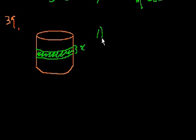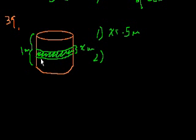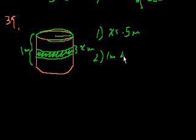Statement 1: x is equal to 0.5 meters. That alone doesn't help us — we still need the circumference of the tub. Statement 2: the height of the tub is 1 meter. That still doesn't tell us how far around the tub goes. If they had given us the diameter, radius, or circumference, we could have figured it out. But they didn't. So both statements combined still do not allow us to figure out the surface area of the painted band. E again.